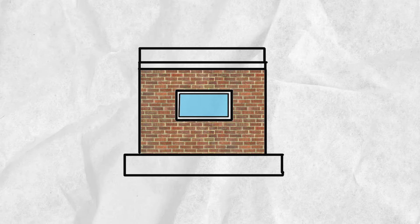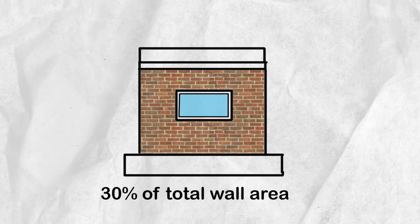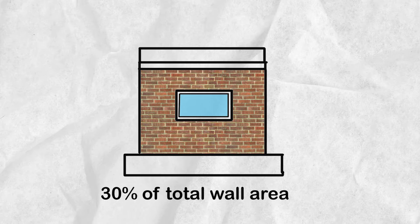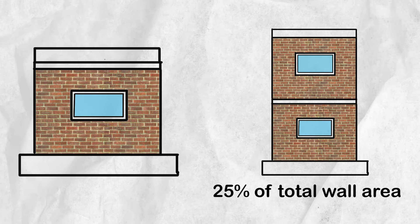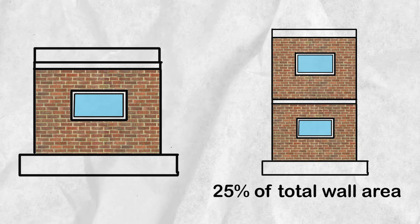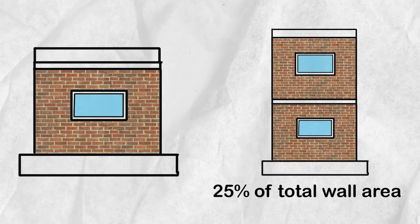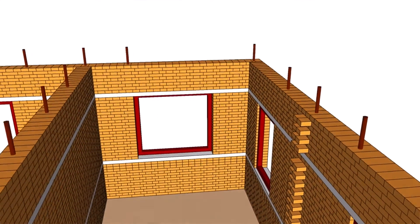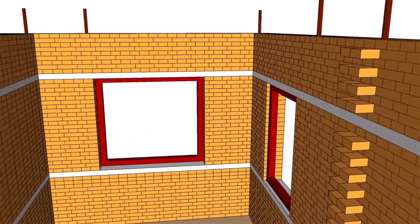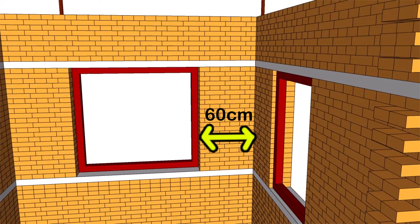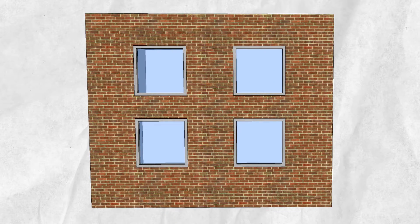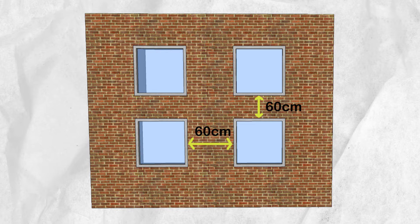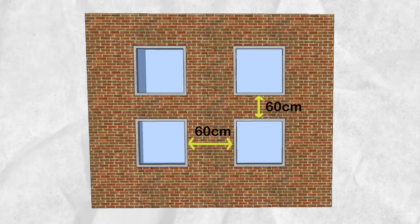For a one-story building, the opening shall not exceed 30% of the total wall length. For a two-story building, the opening shall not exceed 25% of the total wall length. Openings are to be located away from inside corners by a clear distance of not less than 60 cm. Also, the horizontal and vertical distance between openings is to be not less than 60 cm.